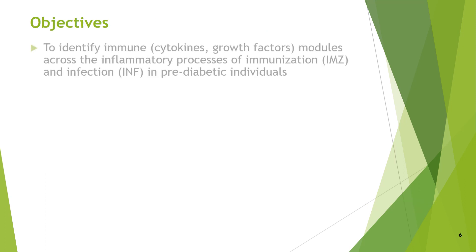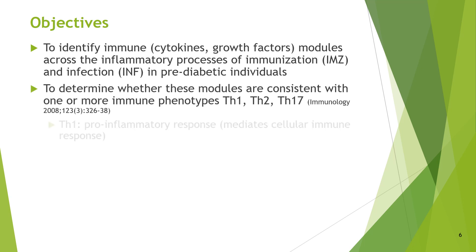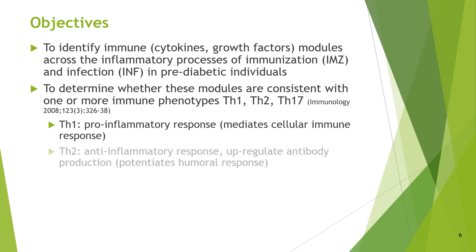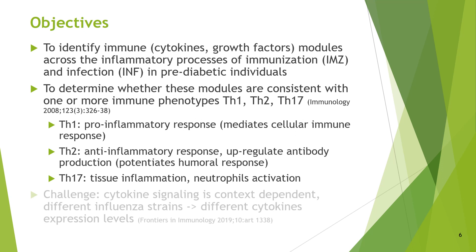The present work had two objectives. Motivated by the large proportion of variance explained by immune markers, one objective consisted in identifying immune modules across the inflammatory process of immunization and infection in these pre-diabetic individuals. The second objective was to determine whether these modules agree with one or more immune phenotypes — T-helper 1, T-helper 2, or T-helper 17 — thus giving biological interpretation to the modules found.